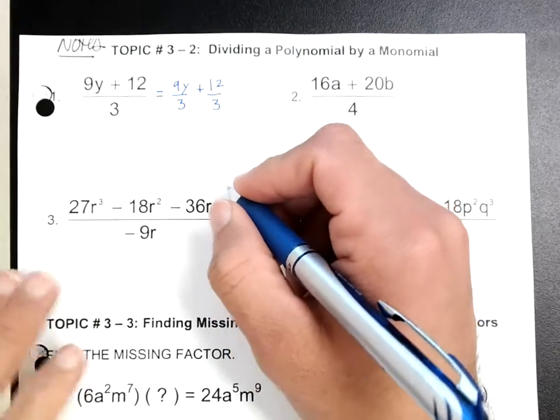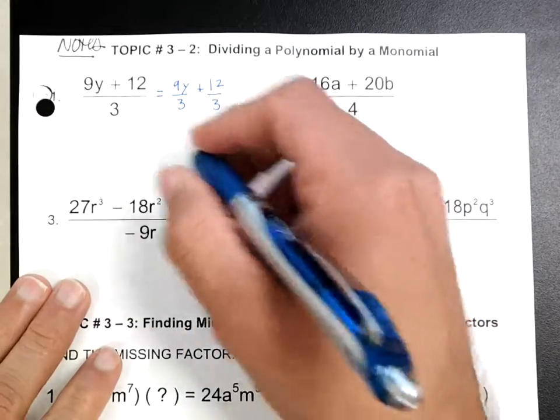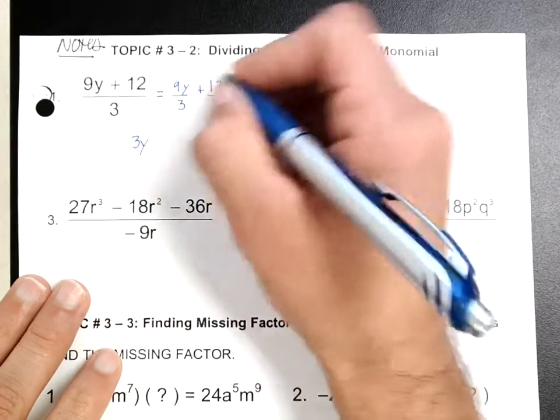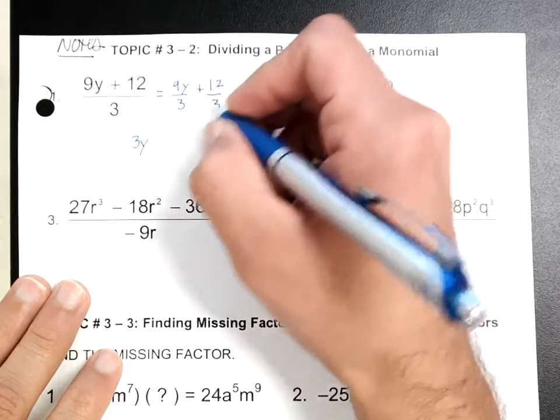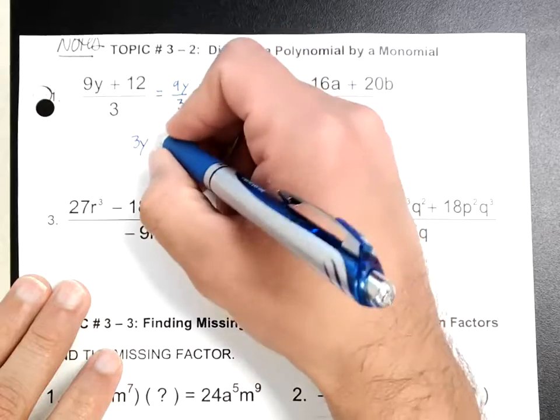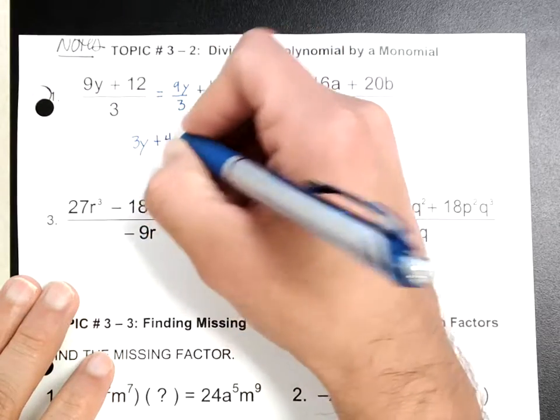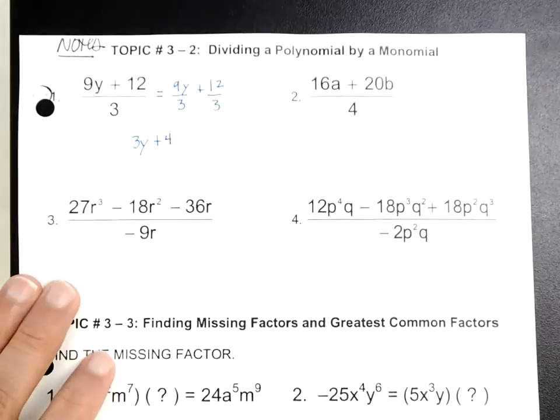So 9y divided by 3 is just 3y. And then 12 divided by 3 is 4. So that's that for that.